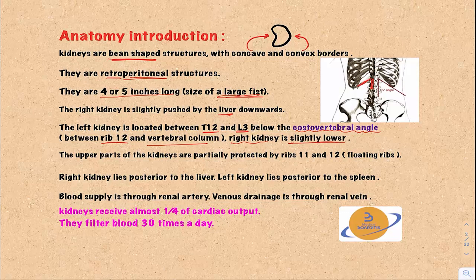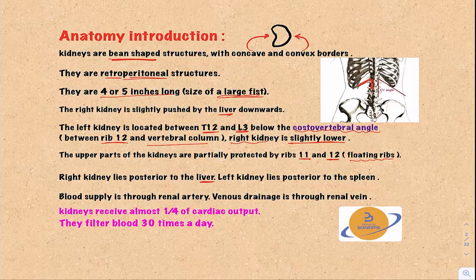The upper parts of the kidneys are partially protected by rib 11 and rib 12. These two ribs — the last two ribs — are called the floating ribs because they are not connected to the rib cage. The right kidney lies posterior to the liver, while the left kidney lies posterior to the spleen.